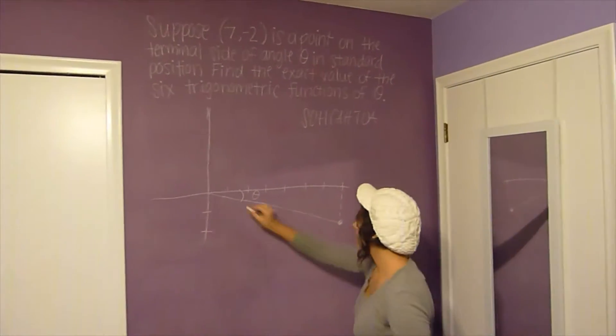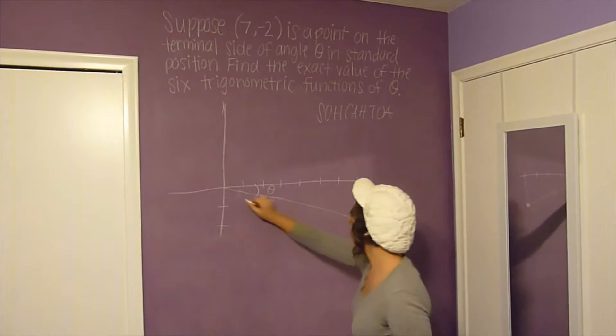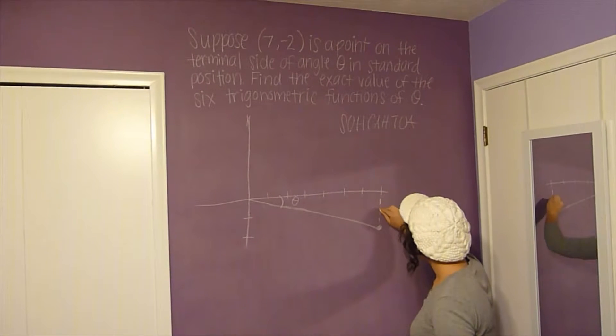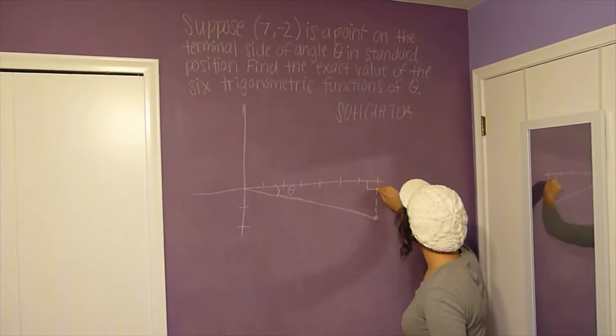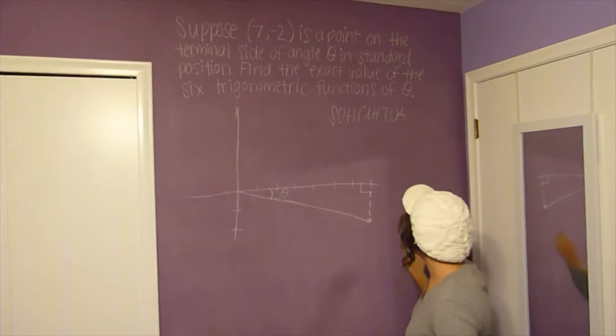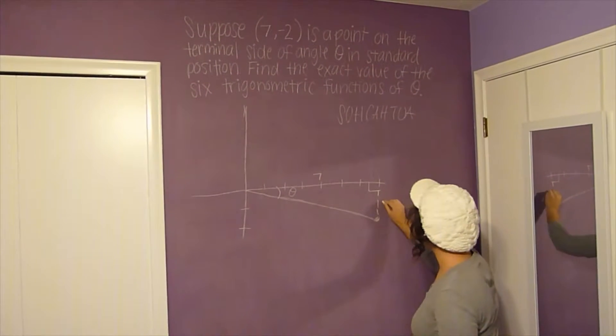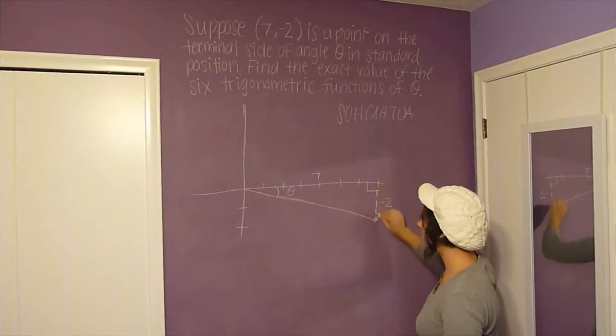So you have (7, -2), and this is your terminal side of angle theta. Make this a right triangle. Since this is 7, this is -2 because you're going down 2.